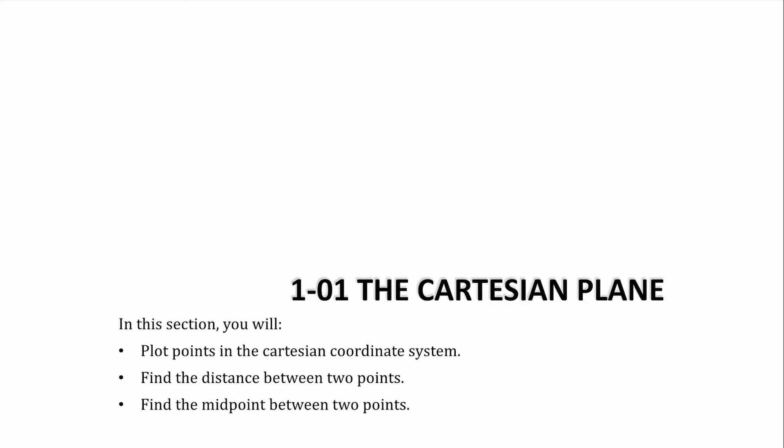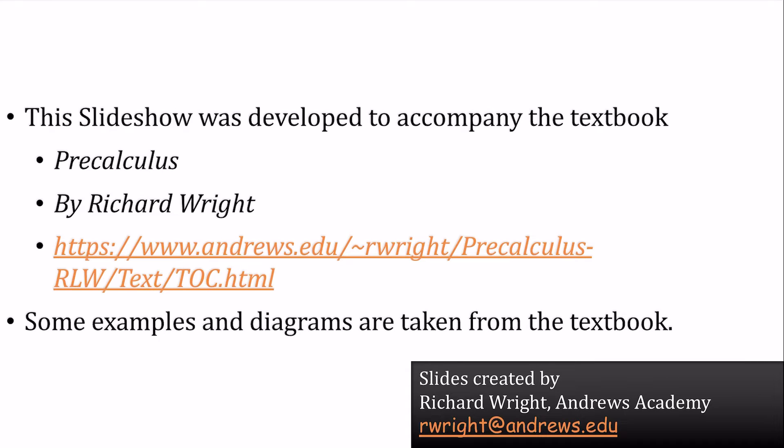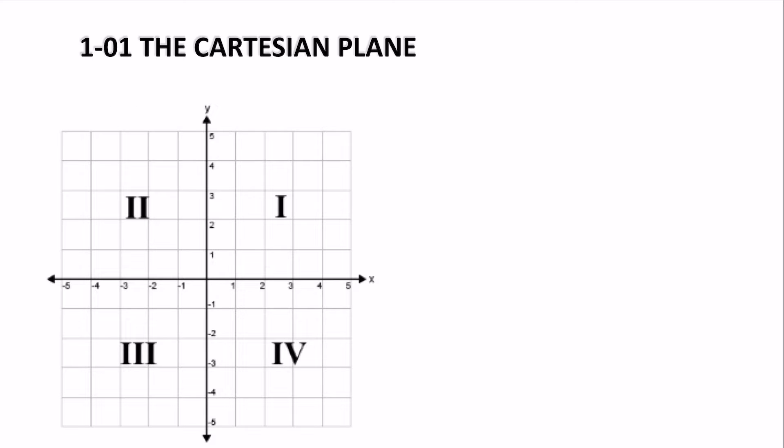Lesson 1-1, the Cartesian plane. The Cartesian plane separates a plane, like your piece of paper, into four quadrants.